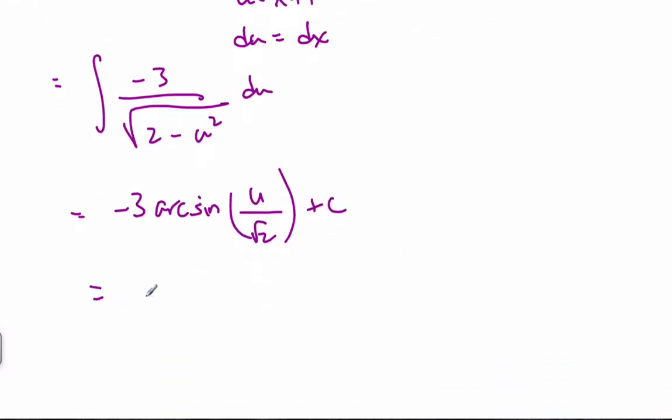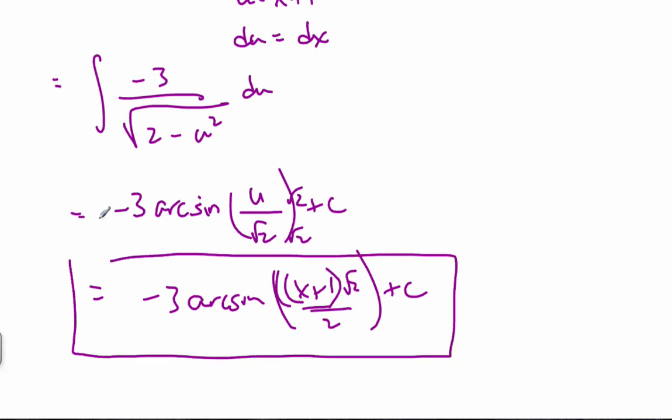Changing it back, I get negative 3, arcsin, x plus 1 over root 2. If I rationalize it, this will be times root 2 over 2 plus c. This is the antiderivative.